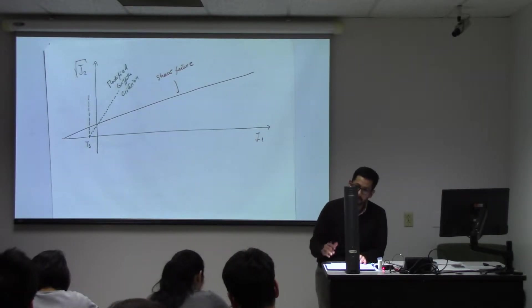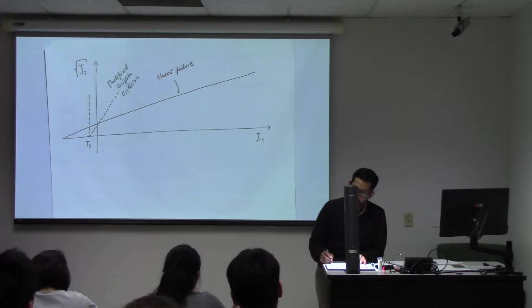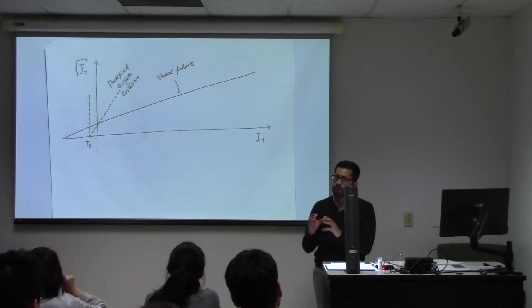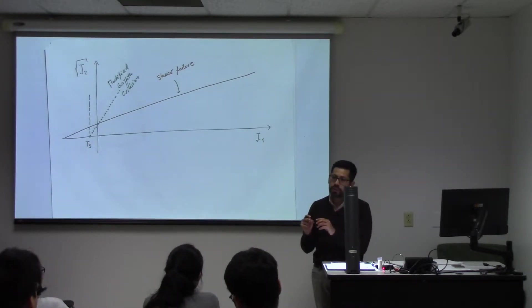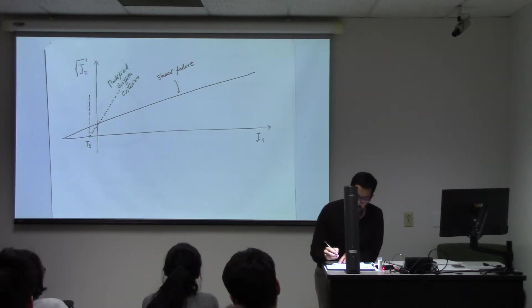Let me anticipate what we're going to see later on. If you were to have pure compression, what will be your J2? Isotropic compression, J2 will be zero, right?